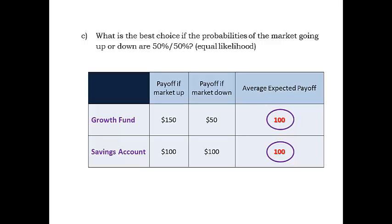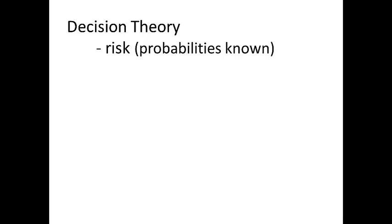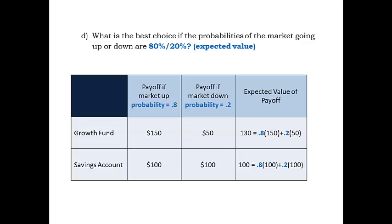Note that equal probabilities were assumed arbitrarily without considering the market's history. If we learn something about the market's history and measure the probabilities of the market going up or down, the situation is labeled risky, whereas the previous situation with unknown probabilities was labeled uncertain. For the risky situation with known probabilities for the chance events, weighted average payoffs can be computed for each decision alternative, where the probabilities are the weights. Since the market will go either up or down, the probabilities — here 80% and 20% — must add up to 100%.